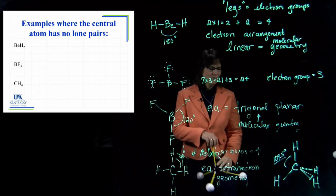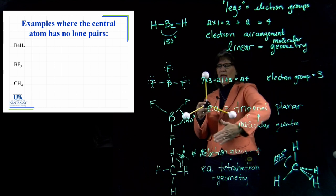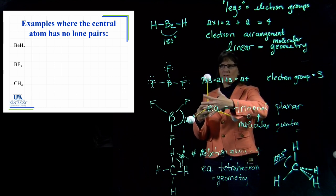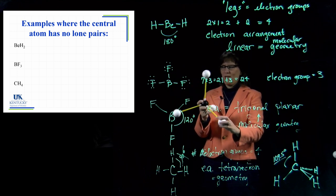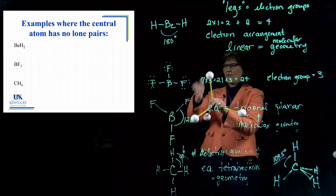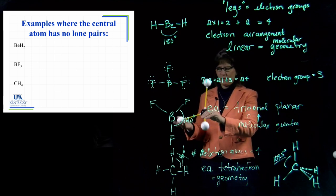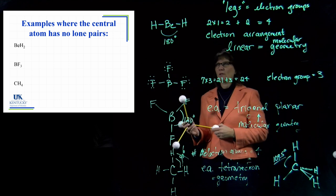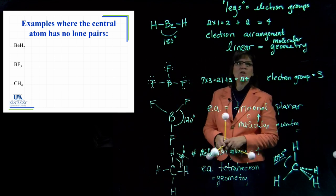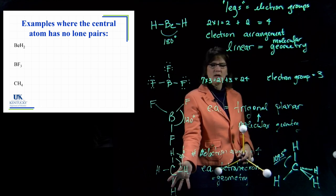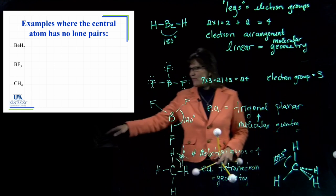A tetrahedron has four faces. If you connect any three of the four atoms with a plane, that's one face. You get faces between each set of three atoms, giving four faces total — like a four-sided die. So we have two legs (linear), three legs (trigonal planar), and four legs (tetrahedral). Beyond four legs requires an expanded octet, which is our next set of examples.